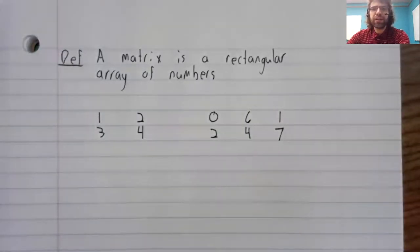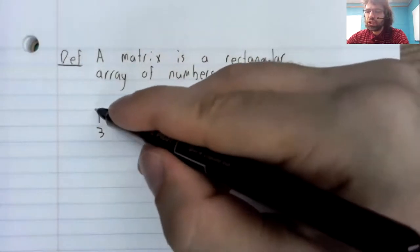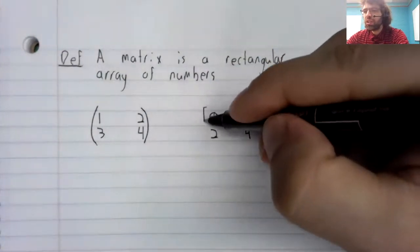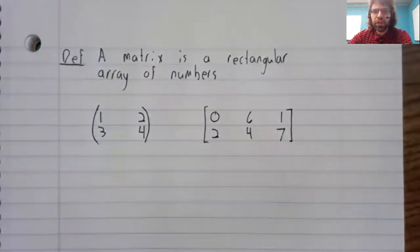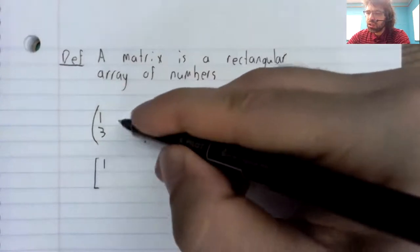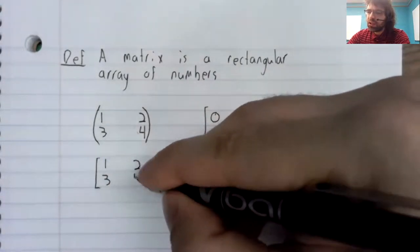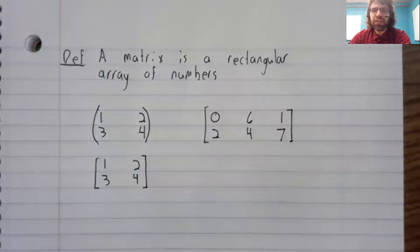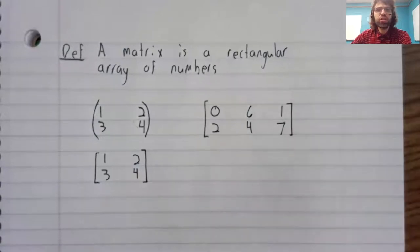We surround matrices notationally either with open parentheses or closed brackets. And unlike interval notation, where parentheses and brackets are different, this matrix with open parentheses and this matrix with closed brackets are the same matrix. It's entirely down to personal preference which notation you use.